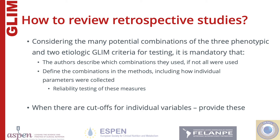Most studies published on GLIM are retrospective, which means they are limited in the methods used to collect nutrition information. Preferably, at least four variables are used in retrospective studies, and it should be described which ones were used and those not included. For example, a study which uses BMI as a phenotypic criterion and assumes inflammation is present in all ICU patients as an etiologic criterion may have different results than if body composition and nutritional intake as a percentage of requirements were used in the same patient group. Prevalence of malnutrition will vary depending on the criteria used.